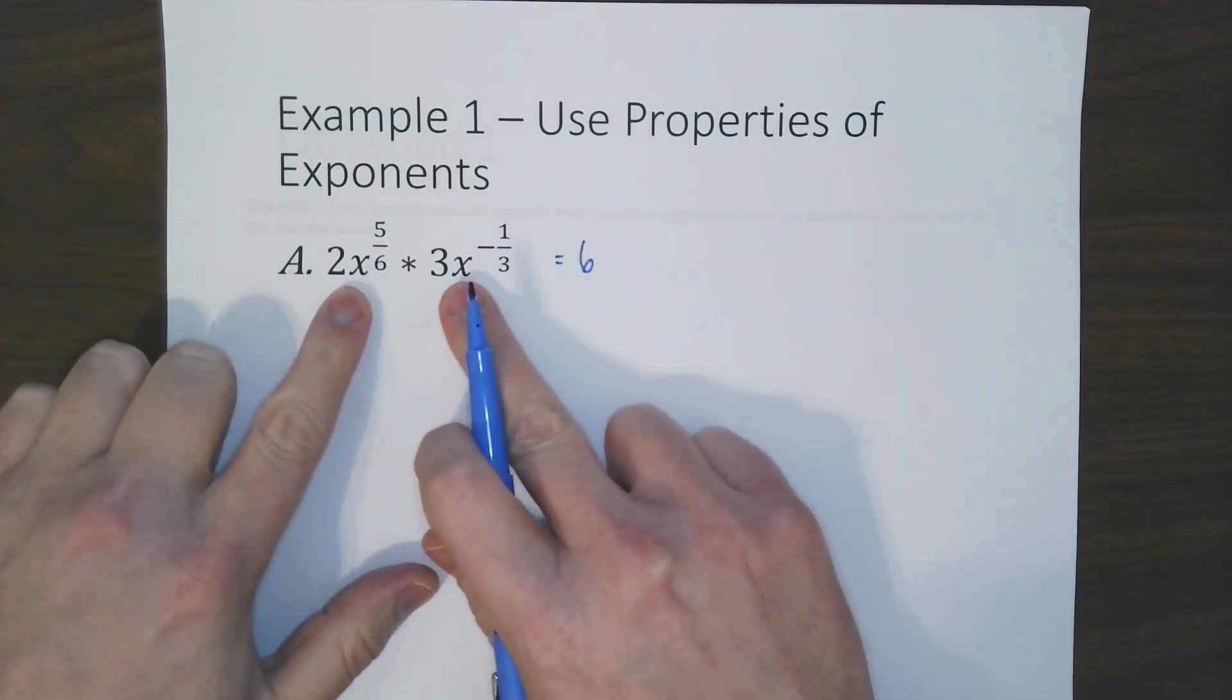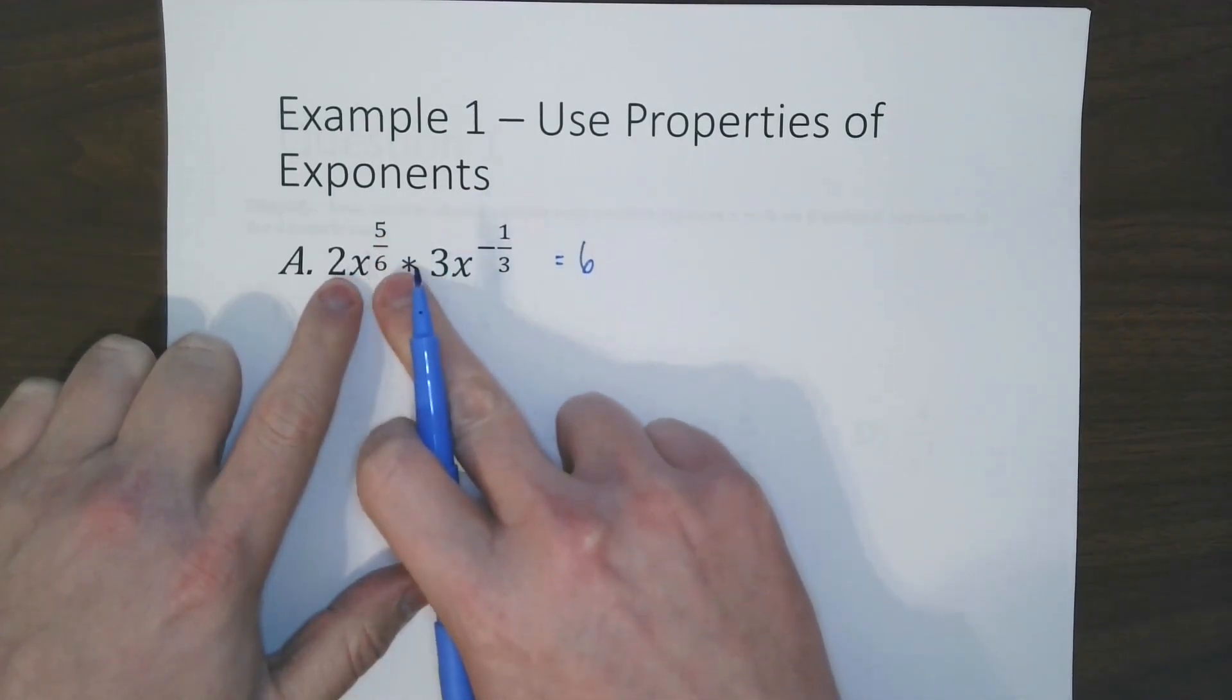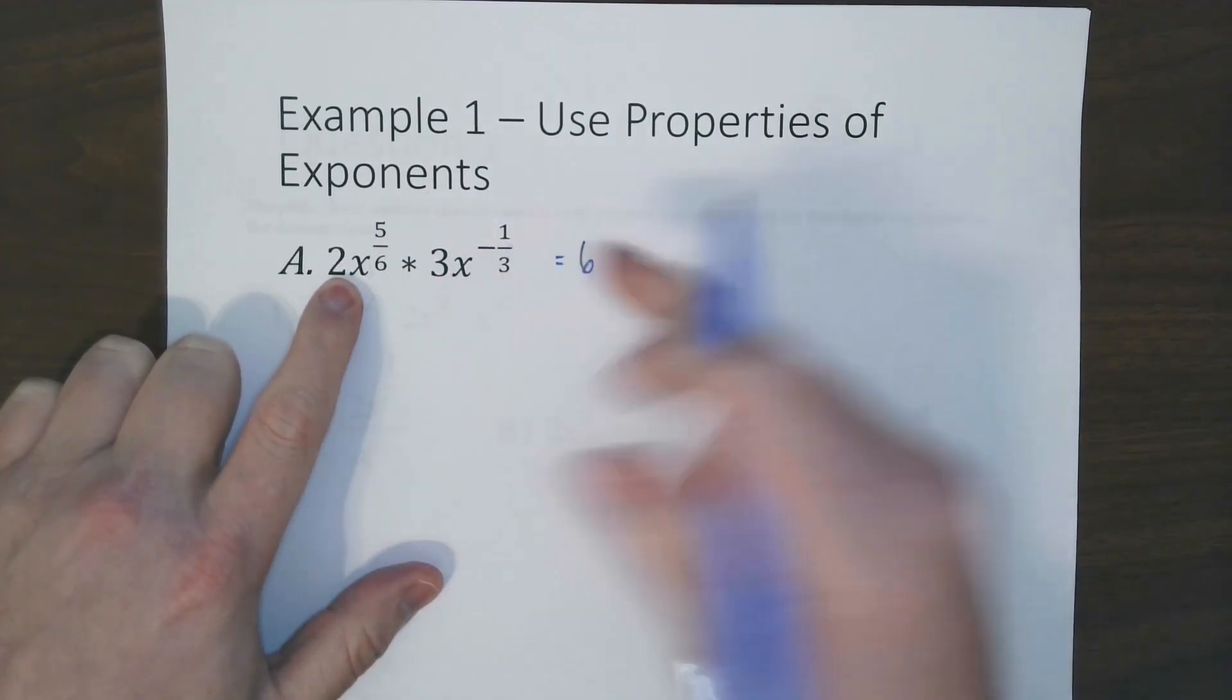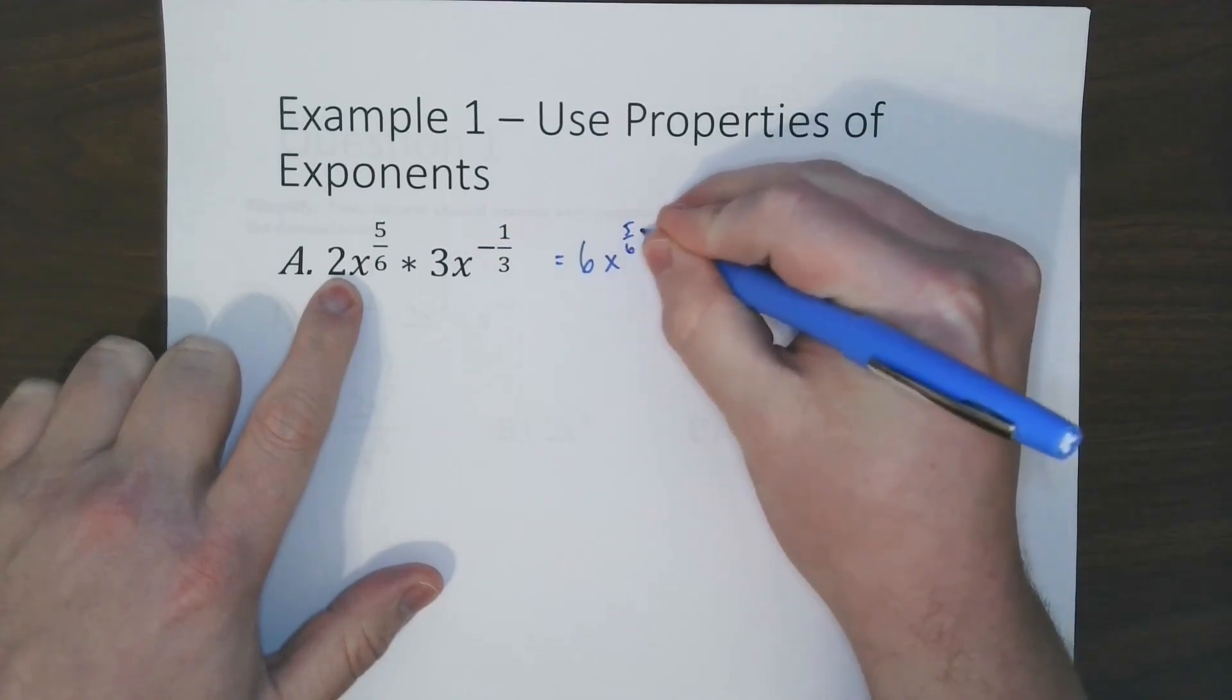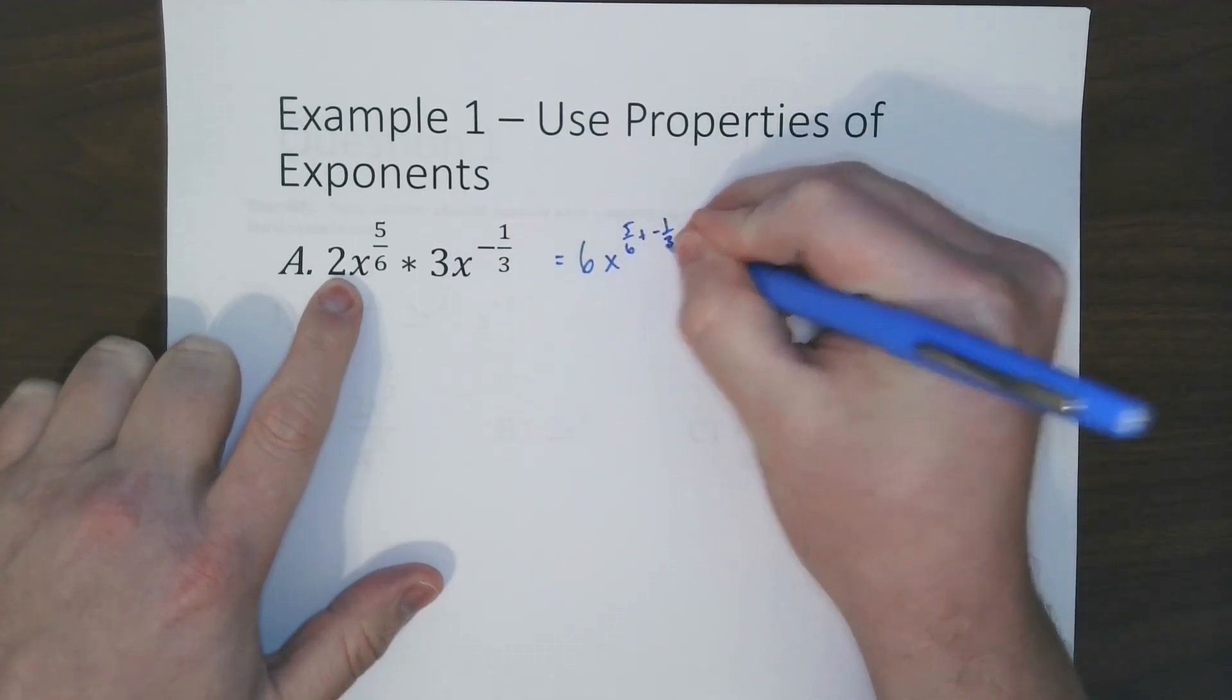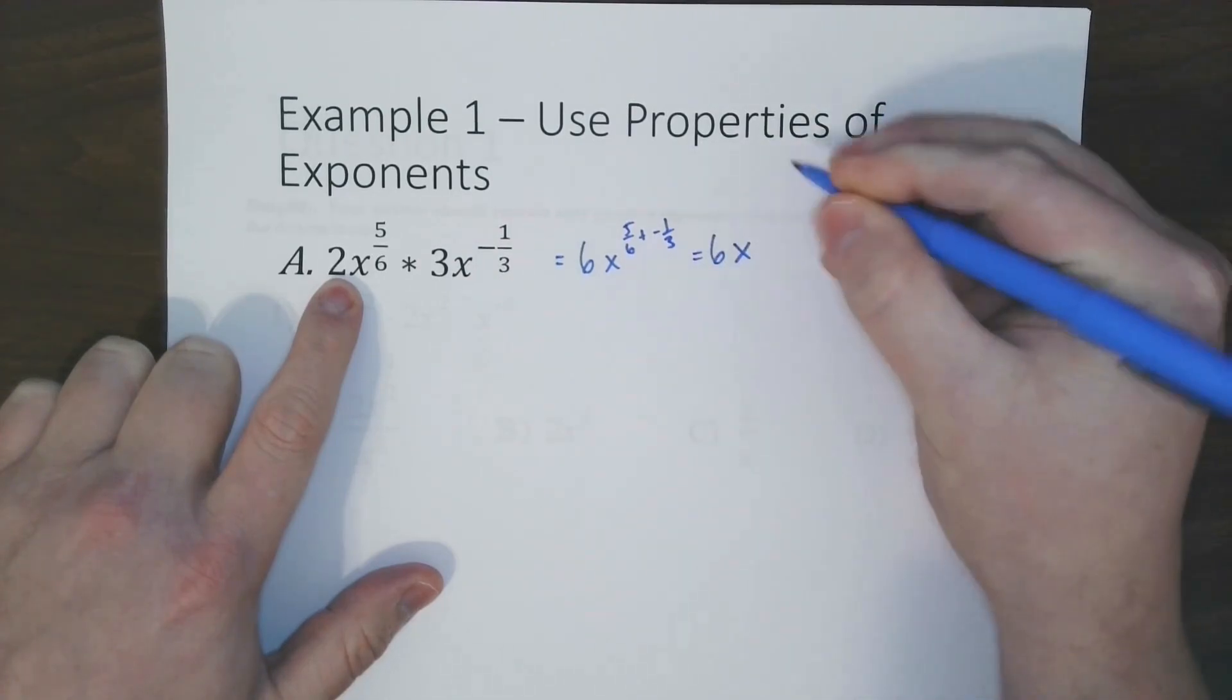Now since these have the same base, which they're both x, we are allowed to add these exponents because of multiplication. So if we go 5/6 plus negative 1/3,